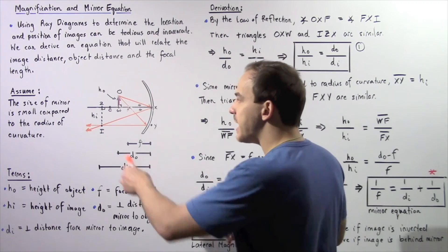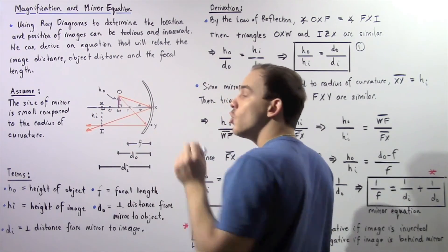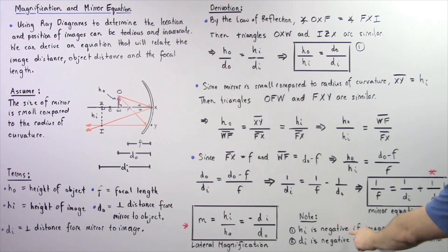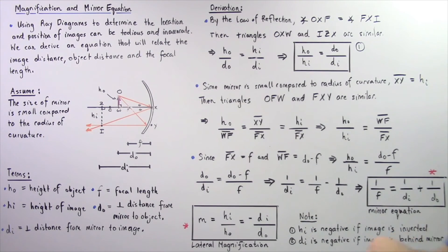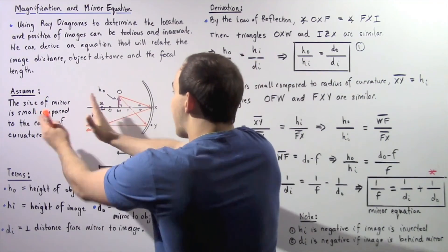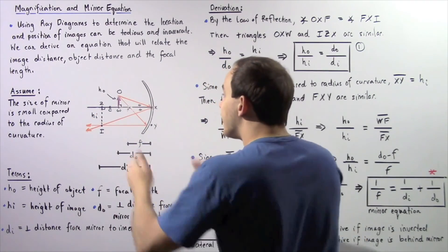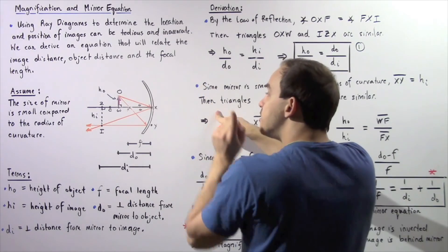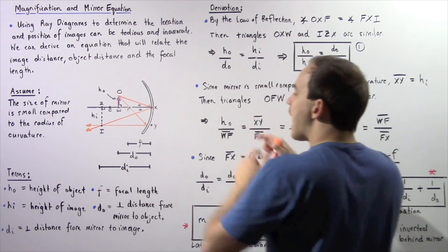If the image points in the opposite direction to the object, HI will be negative, meaning the image is inverted. If the image points in the same direction as the object, HI will be positive, meaning the image is right side up. DI is assumed to be negative if the image is located behind our mirror. If the image is on the same side as the object, DI is positive. If the image is on the other side of the mirror, DI is negative.